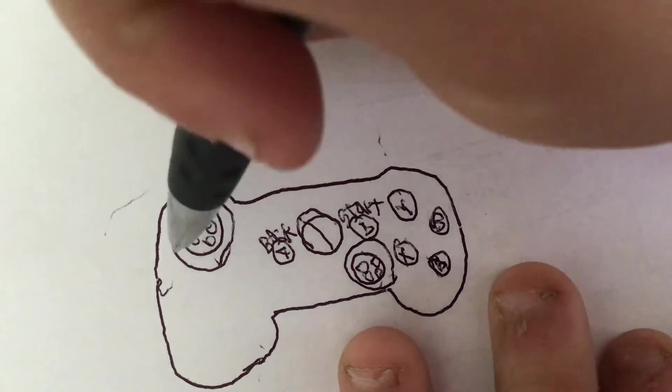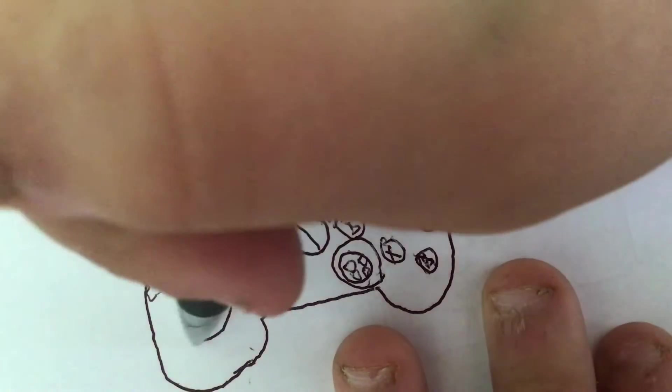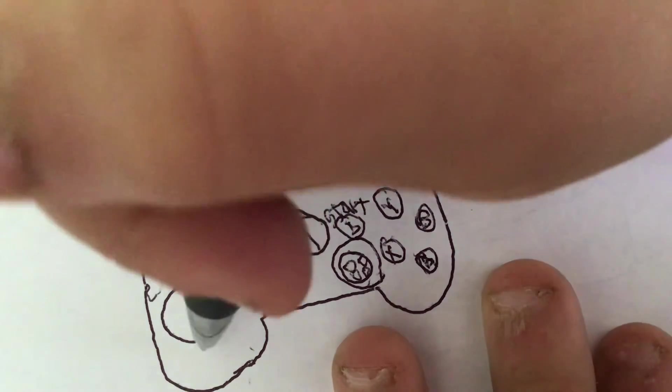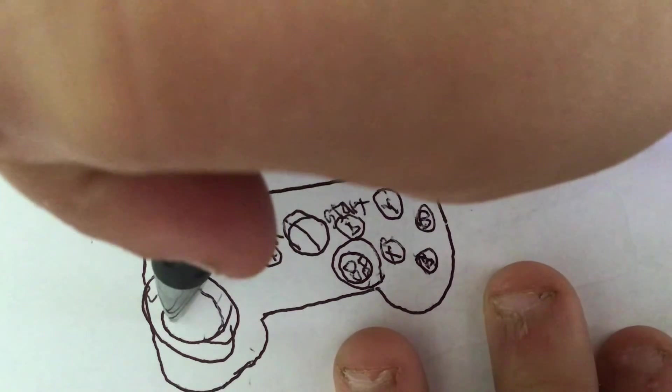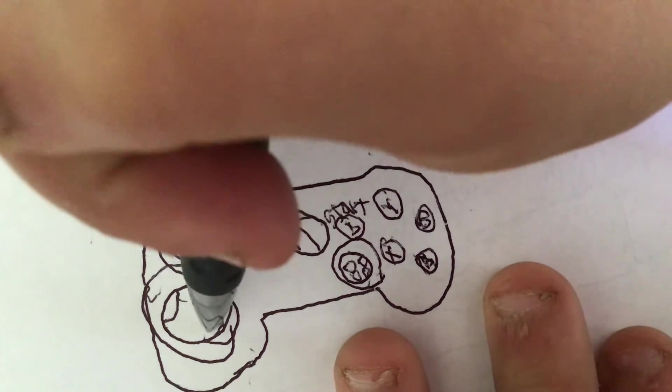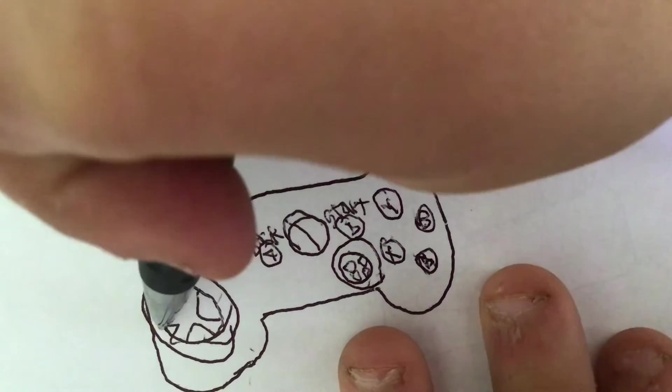And then another big circle. And then we're going to make like a cross.